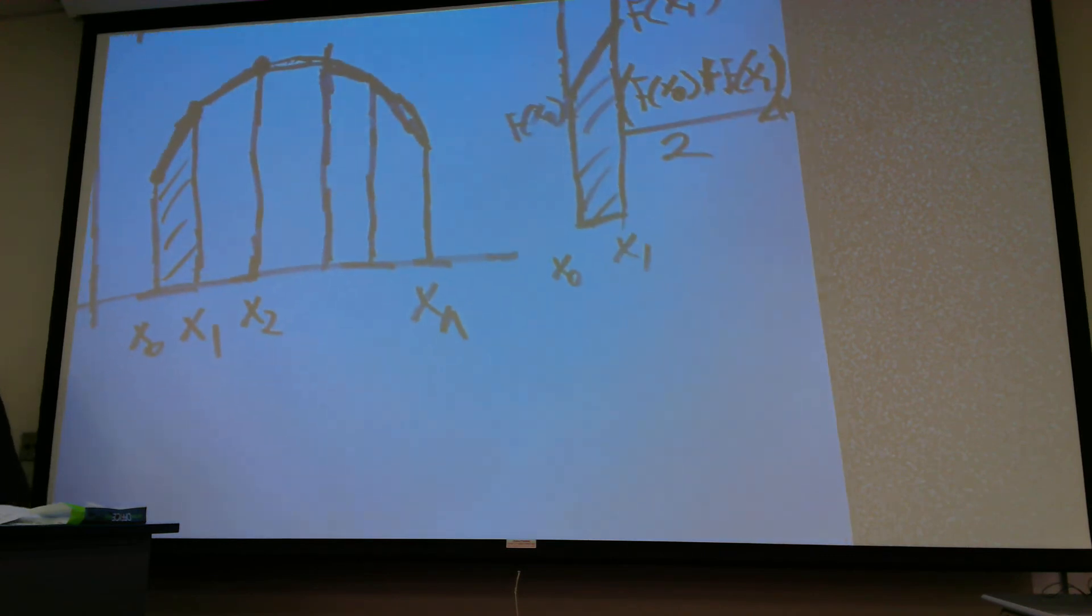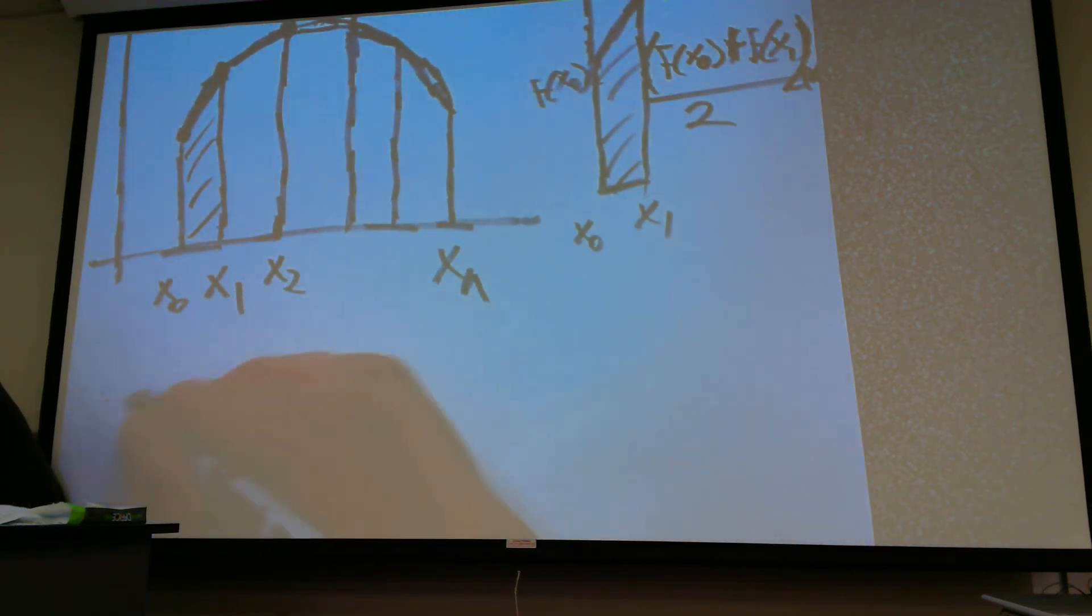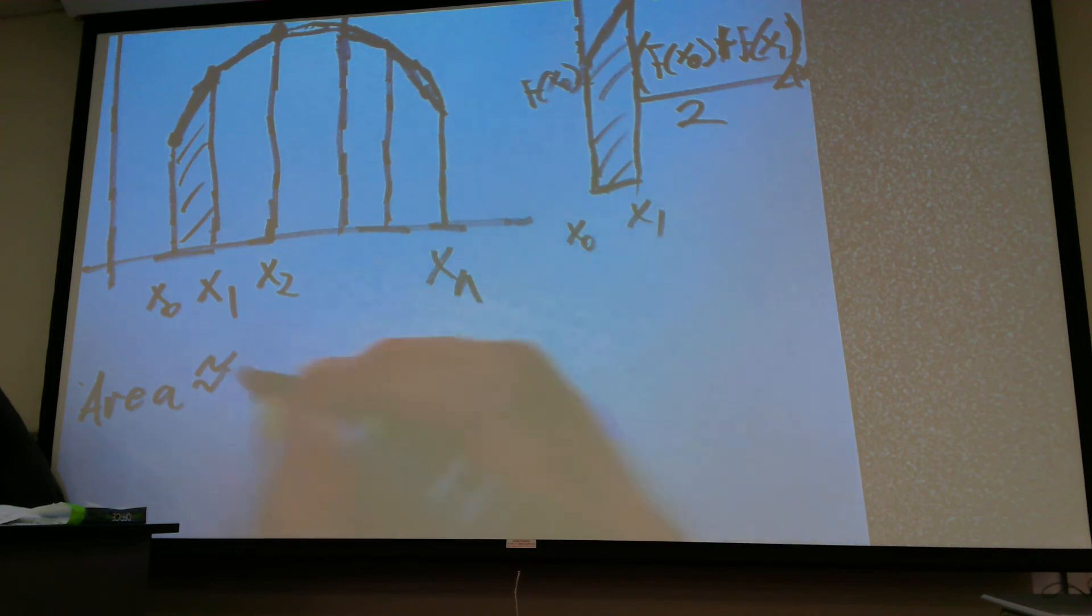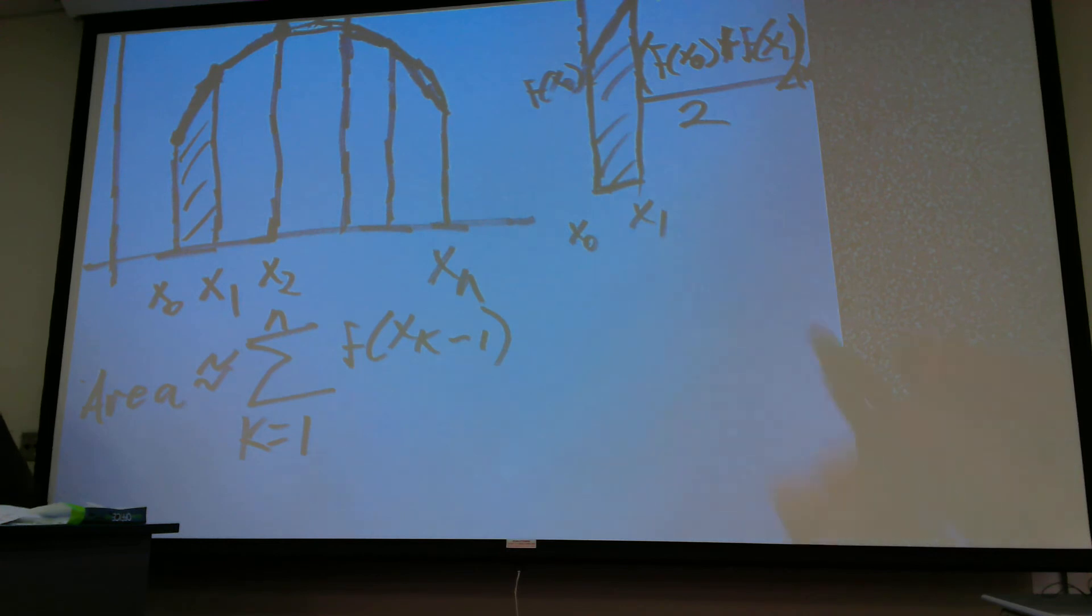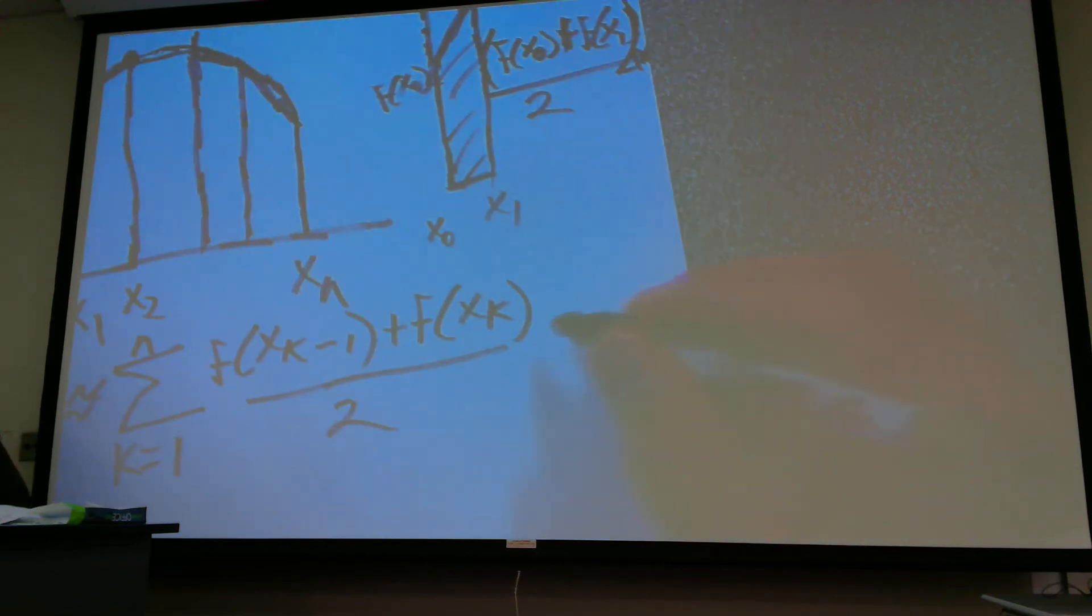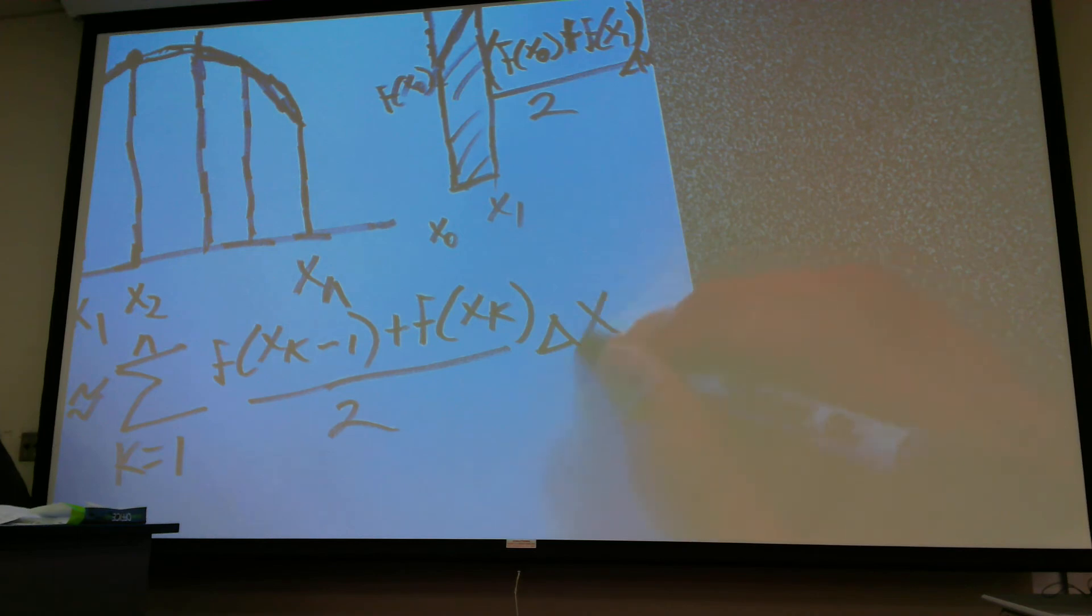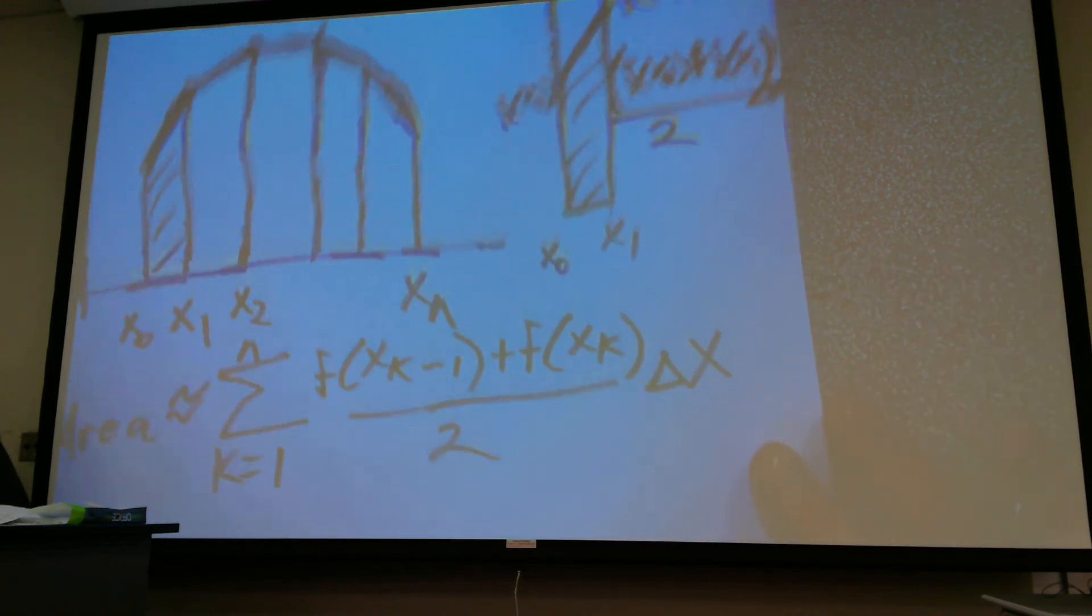So, the formula that would be associated with this one is I'm going to add up all these trapezoids, and so, the area would be approximated by the sum k equals 1 to n of f of x sub k minus 1, because we're starting f of x0, and then plus f of x sub k. And we've got to take all those trapezoids, we've got to divide them by 2, because we want to take half of that. And then we would multiply it by delta x.